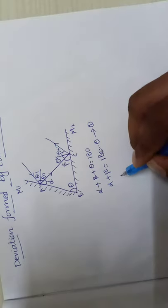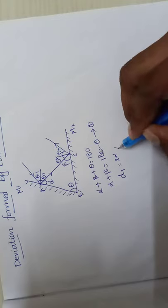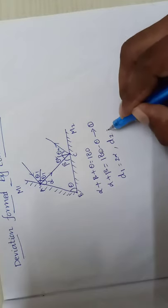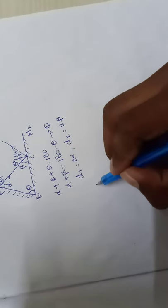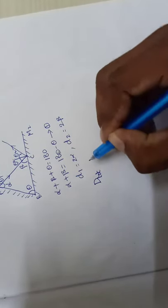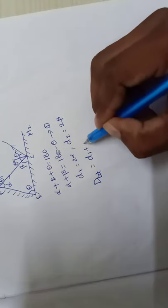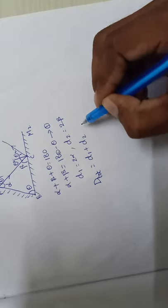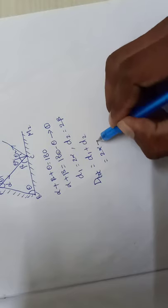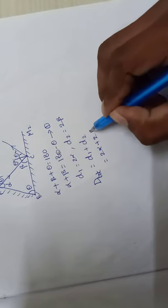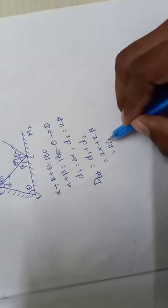So total deviation is equal to deviation of first mirror plus deviation of second mirror. So deviation of first mirror is 2 alpha plus deviation of second mirror is 2 beta. Then we can factor out 2, then 2 into alpha plus beta.